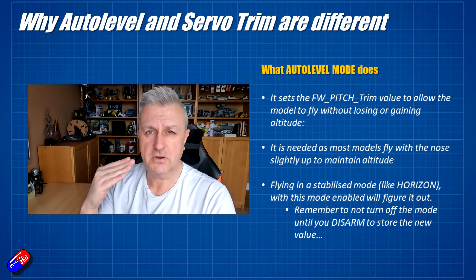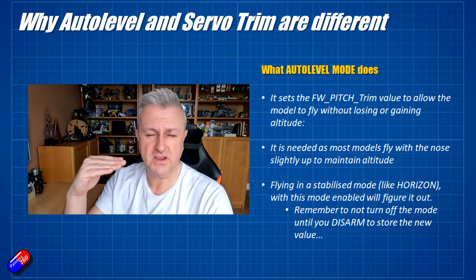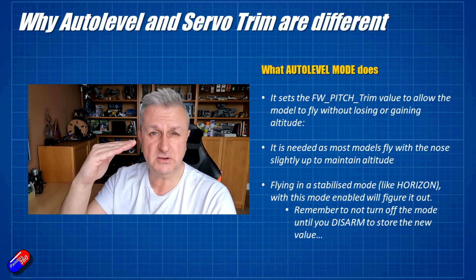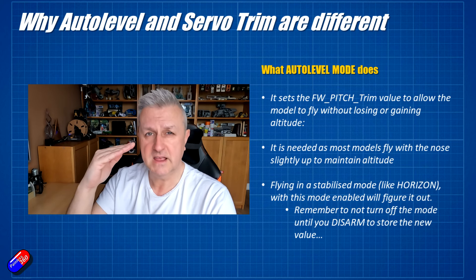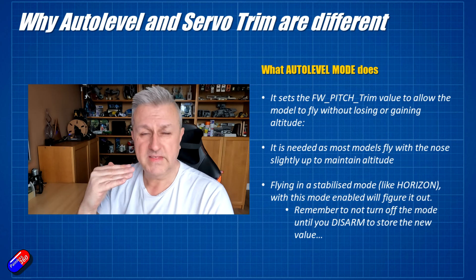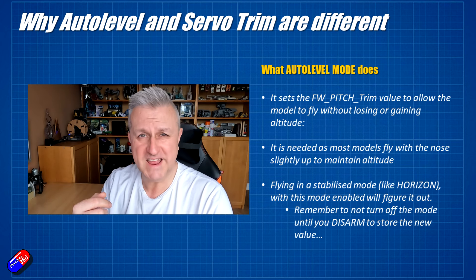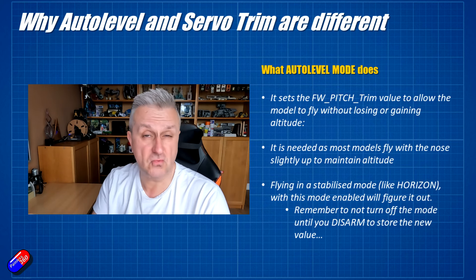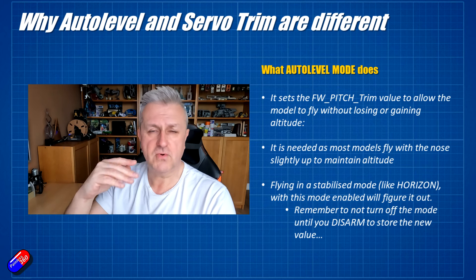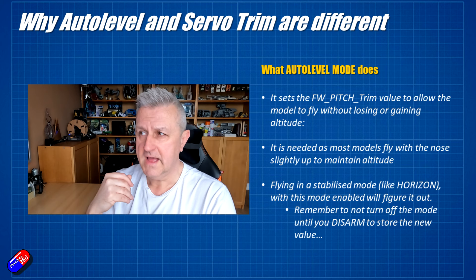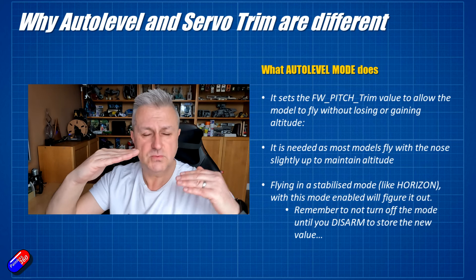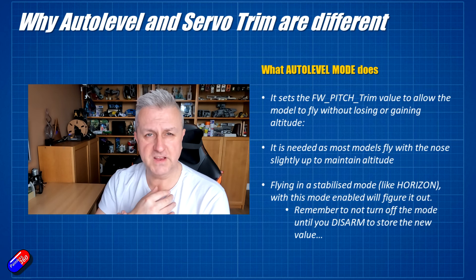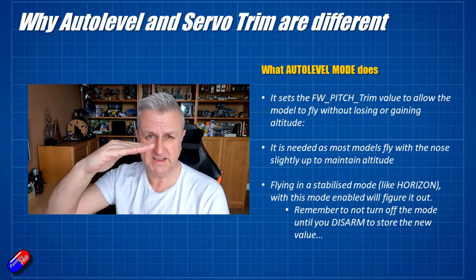Why do we need that slight offset? Well, most model aircraft, when you put a flight controller in it, the flight controller will be sitting pretty level. However, the nose of the plane needs to be up anything from one or two degrees up to six, seven, even eight degrees in order to maintain altitude as you're flying around. That slight nose-up is what the fixed-wing pitch trim actually does in iNav. So what auto trim mode does is — as you are flying around in something like horizon or angle mode — you enable auto level, and it will detect whether the model is rising or sinking and adjust that fixed-wing pitch trim value so that the nose is at the right attitude.